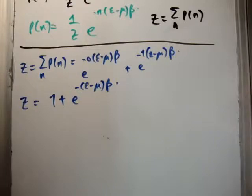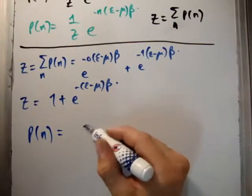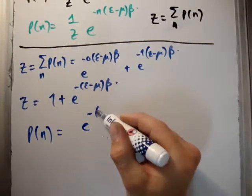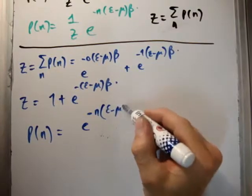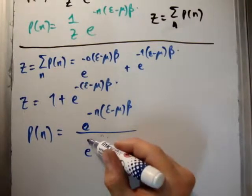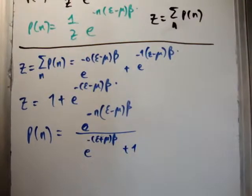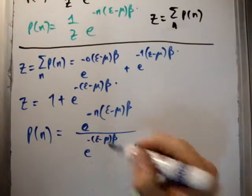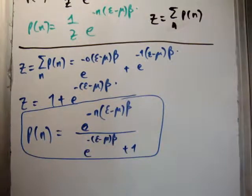Great. So now we have the partition function. That means the probability of state n occurring is equal to e to the minus n(ε - μ)β divided by our grand partition function, which is 1 plus e to the minus (ε - μ)β. That's the probability of a state occurring using the grand partition function and the Gibbs factor.